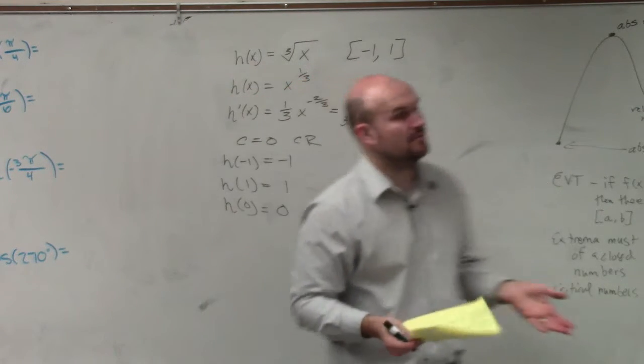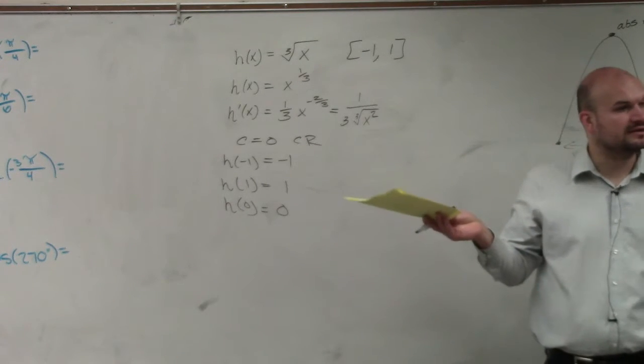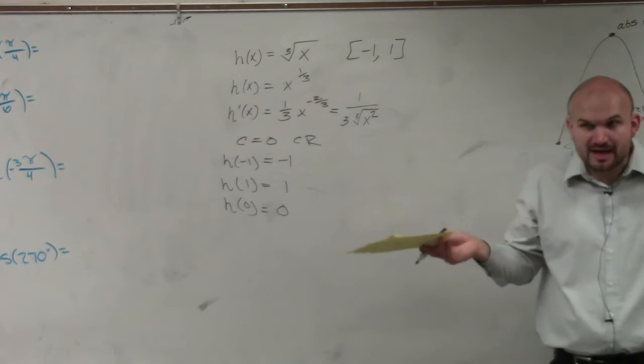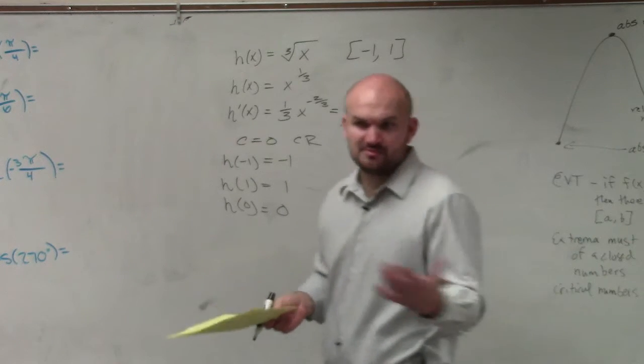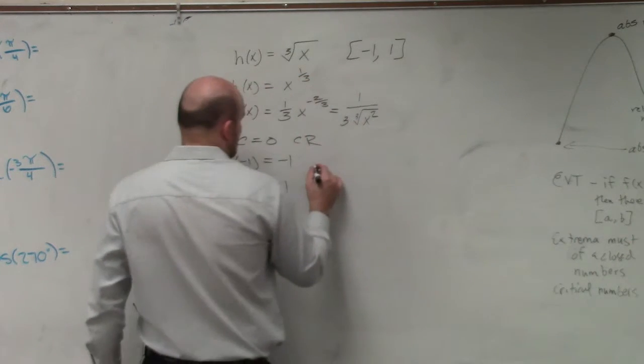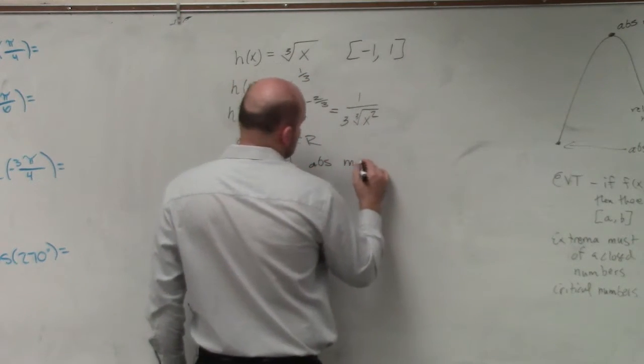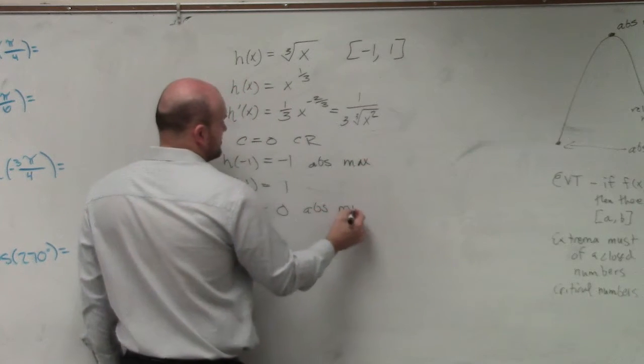So do you guys see how we have a critical number, but it does not provide us with an extrema, right? So it is OK to have critical numbers, but not be provided an extrema. So this is going to be our absolute max. And there is going to be our absolute min.